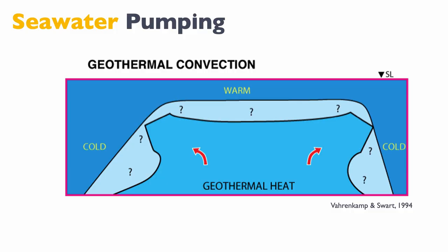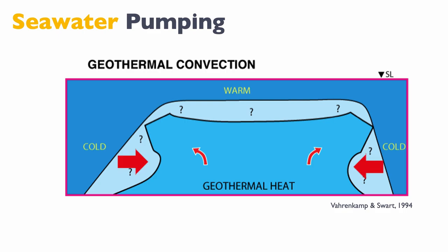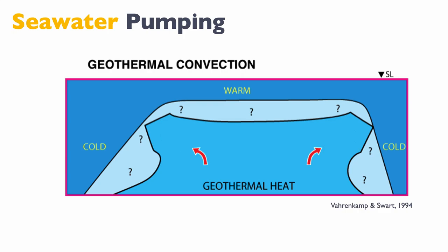One is geothermal convection. The idea is that if you have an isolated platform, the flanks of that platform go deep into the water column, whereas the top of the platform is in warm water. The pore water are relatively warm, and then you have cold water on the edge of the system that will tend to push in and displace this warmer water. Once the cold water gets into the platform, the geothermal heat will heat that cold marine water, making it more buoyant, so it comes up and exits on the flank of the atoll.